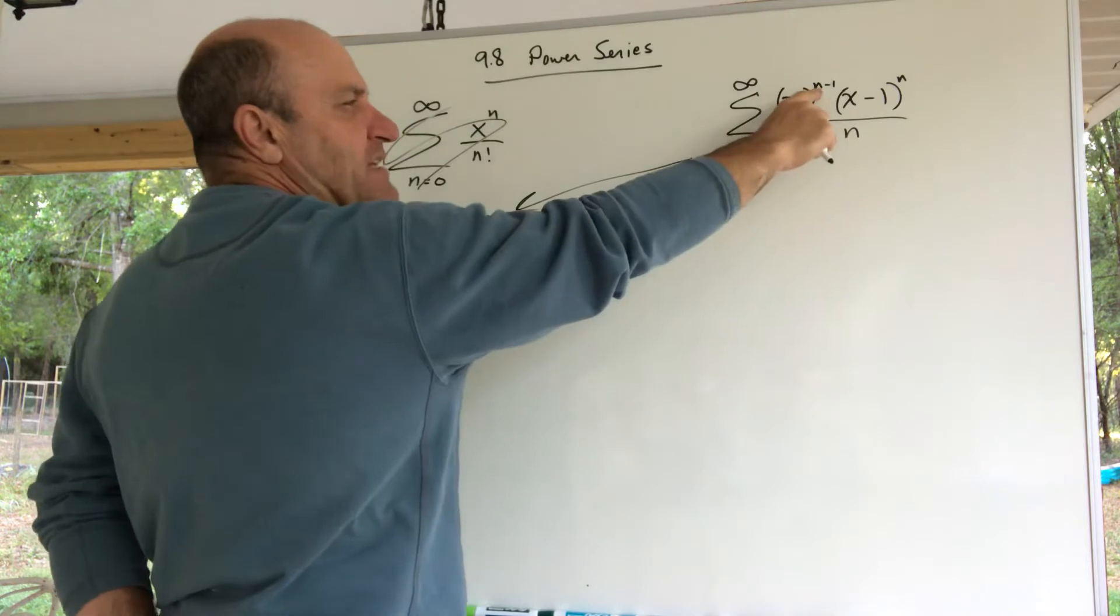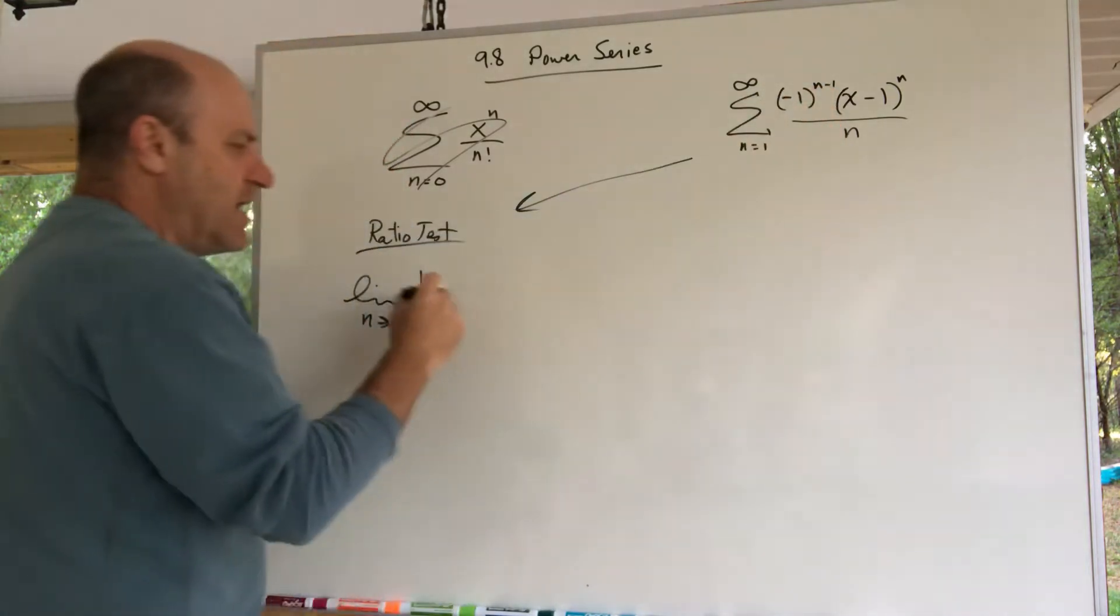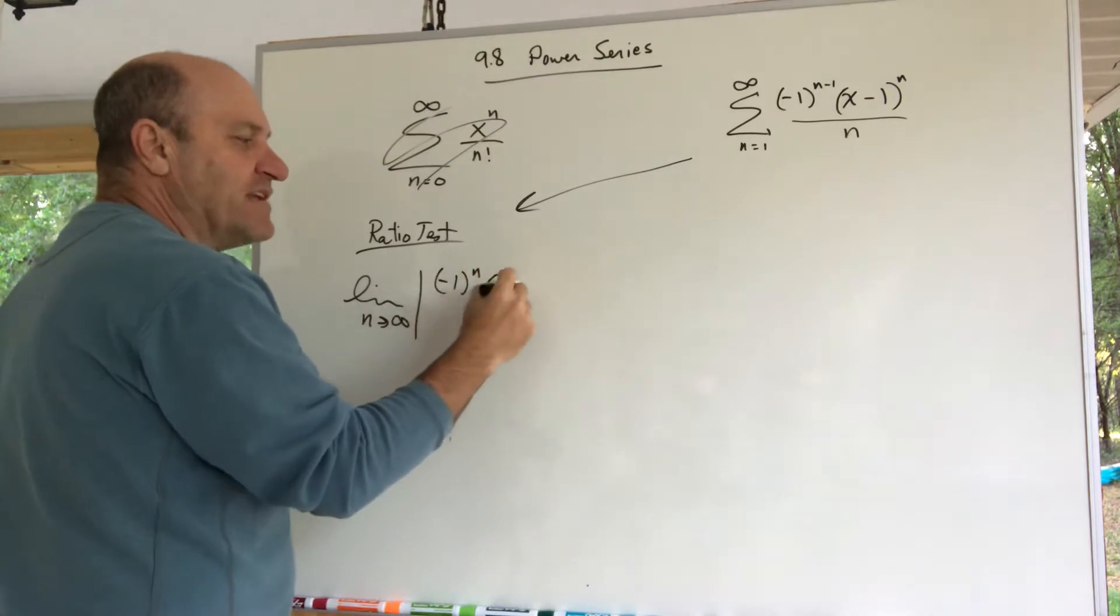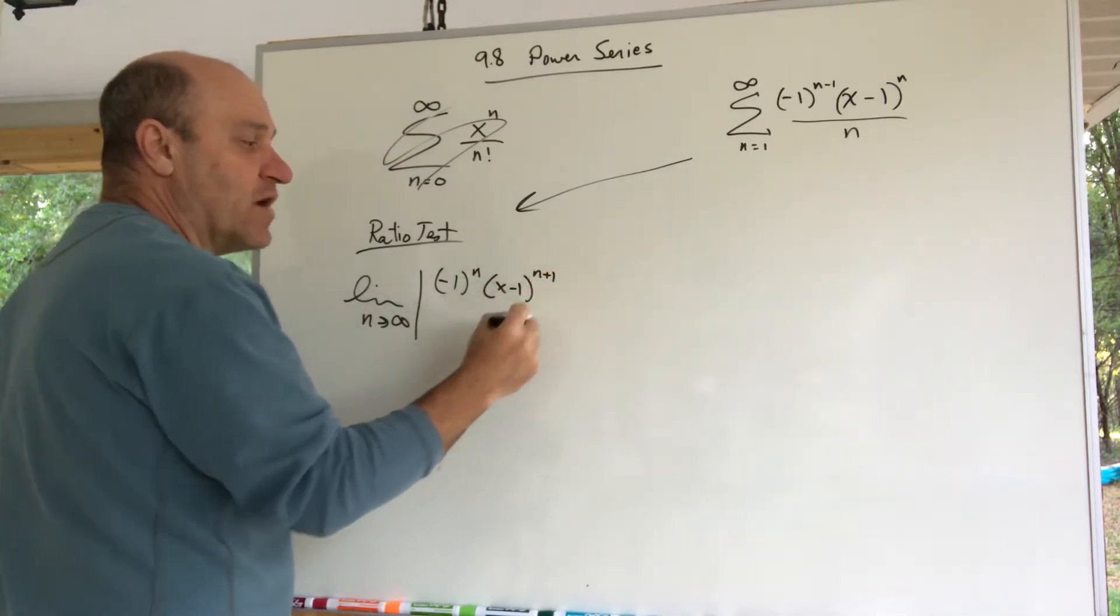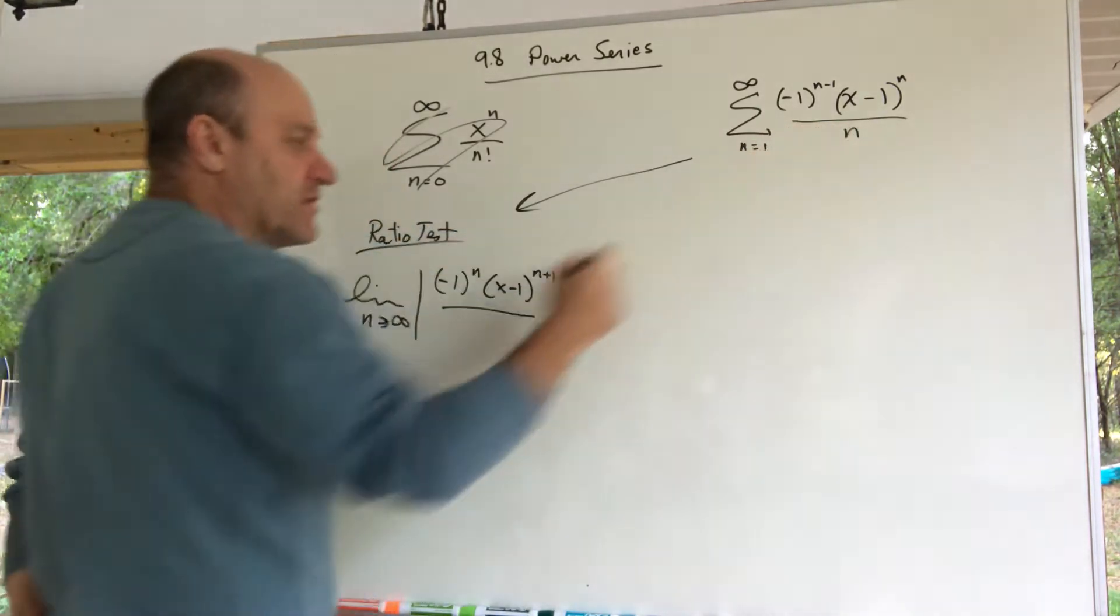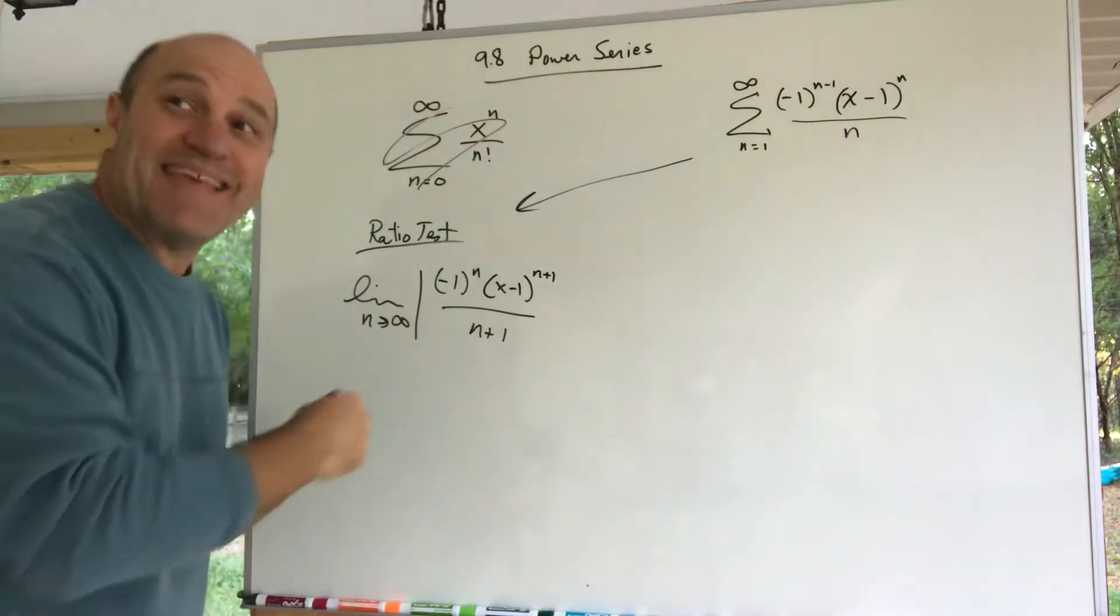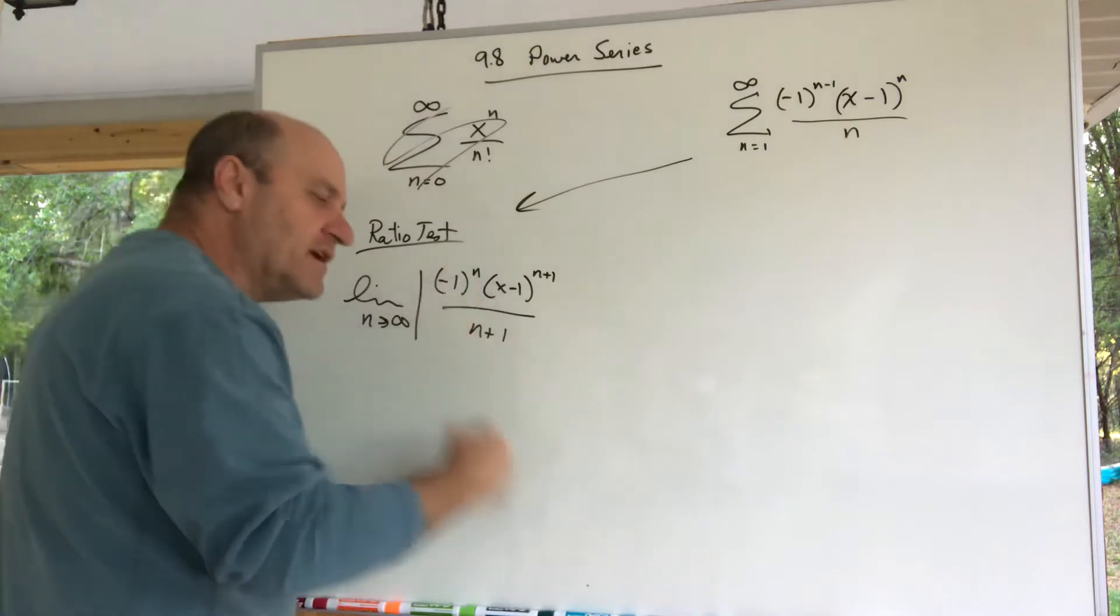When I replace that with n plus one, I get negative 1 to the n, I get x minus 1 to the n plus 1, and it's all over n plus 1. That's the nth plus one term.